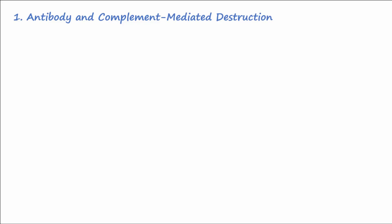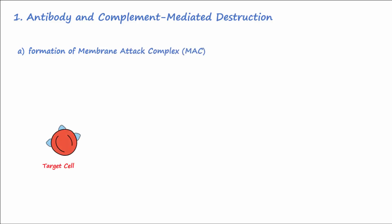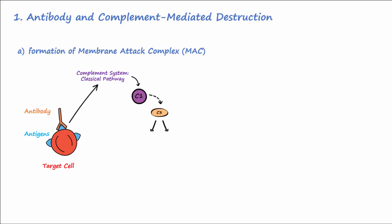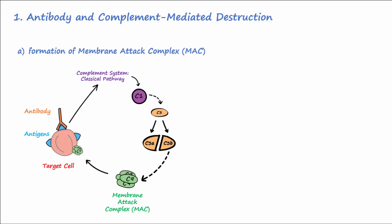The first mechanism of type 2 hypersensitivity can occur in two ways. The first involves the formation of a membrane attack complex, or MAC. A target cell expresses antigens that an antibody binds to, activating the classical pathway of the complement system. This causes activation and cleavage of complement protein C1, leading to cleavage of C3 into C3a and C3b. C3b then activates other proteins, leading to formation of a membrane attack complex involving C9 proteins, which induces lysis of the target cell.